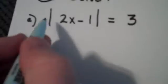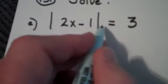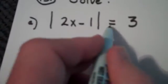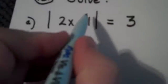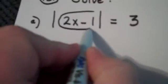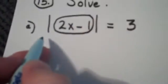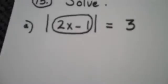And in this case, they already are alone. If the absolute value of 2x minus 1 is equal to 3, what that means in English is that 2x minus 1 is located at a distance of exactly 3 blocks or 3 units from 0.